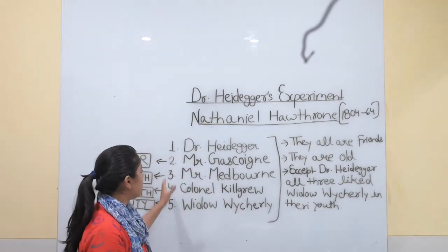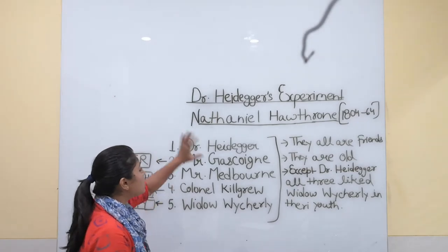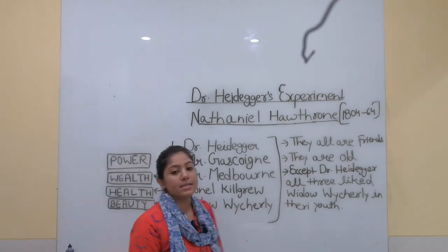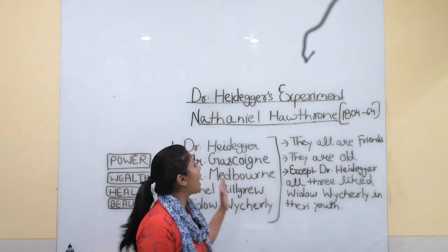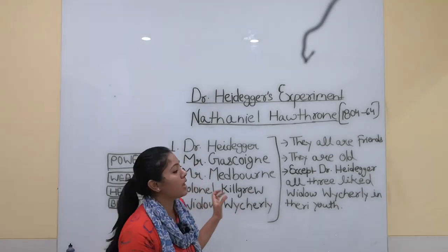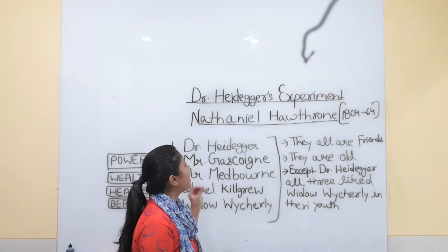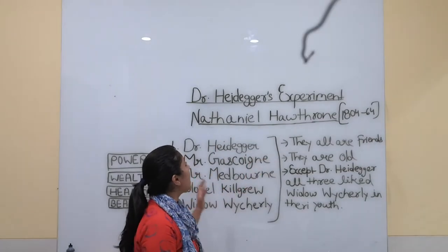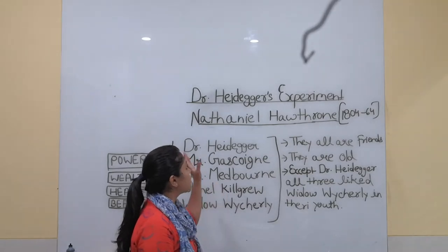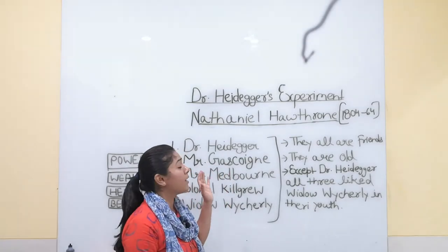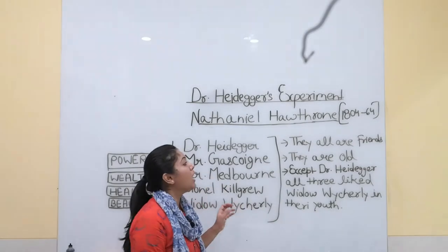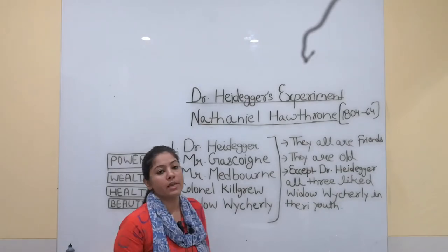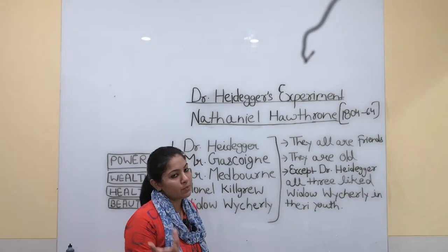In this story, we will see that all events revolve around four characters. So let's start with Dr. Heidegger's Experiment, which is part of the third year student syllabus at MDS University. In this story, Dr. Heidegger conducts an experiment involving his friends.